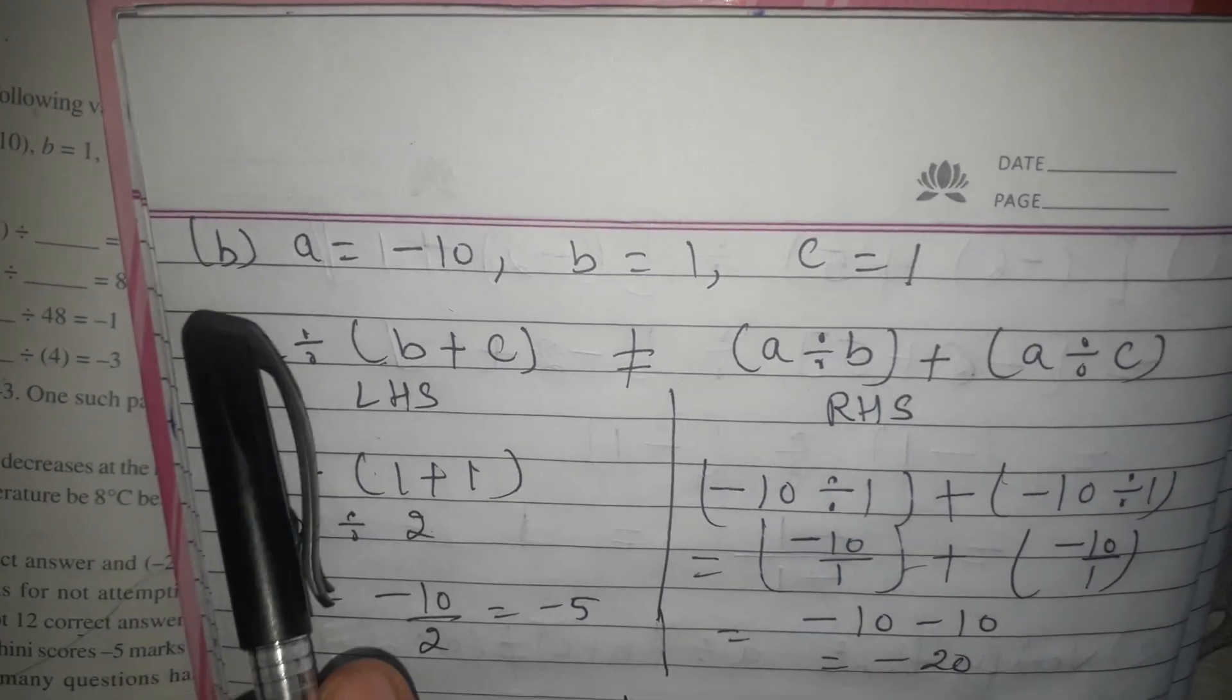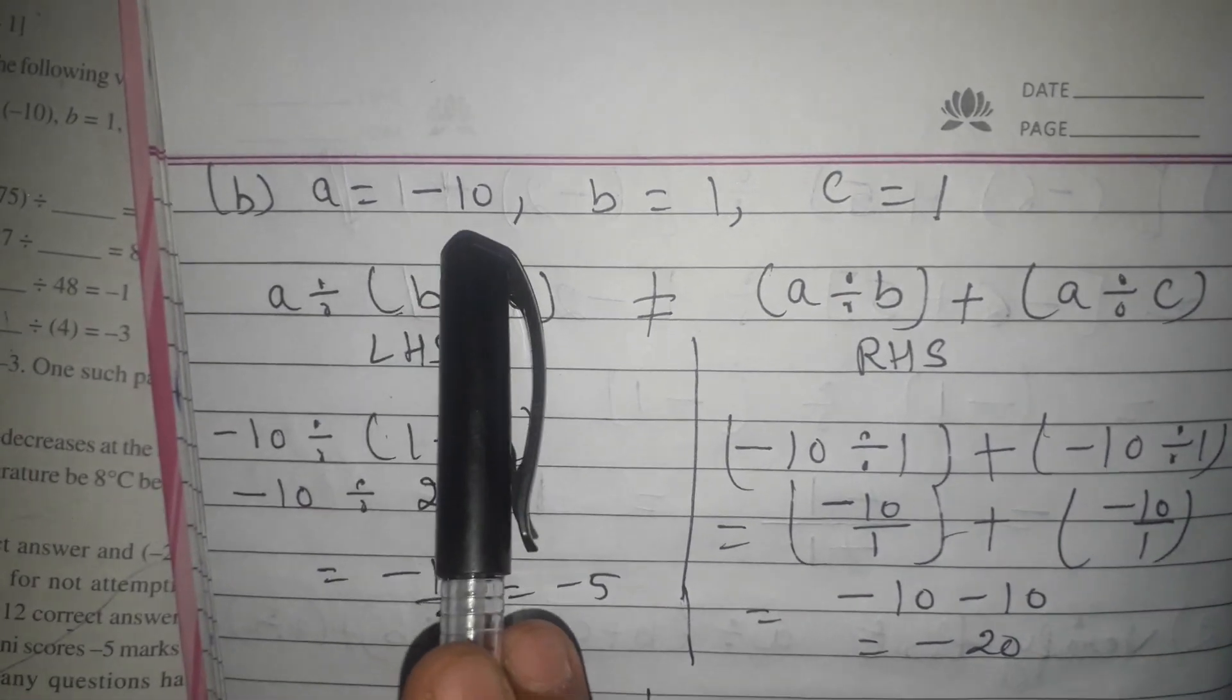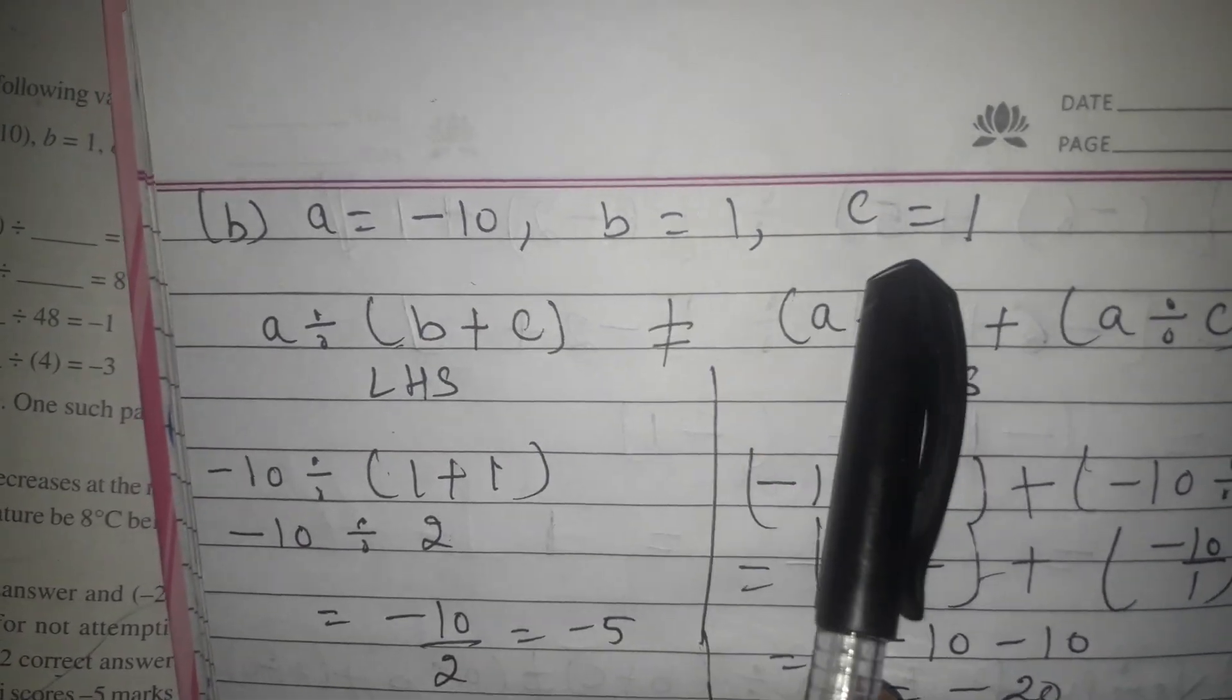Now, I will do B part of question number 2. Here A is equal to minus 10, B is equal to 1, C is equal to 1.